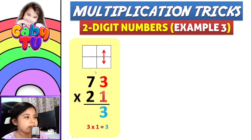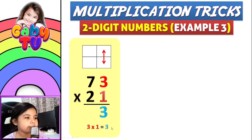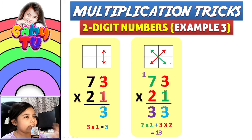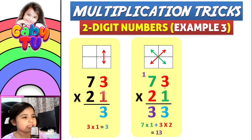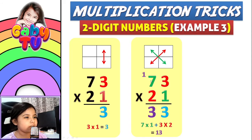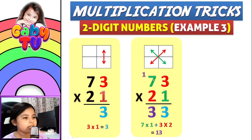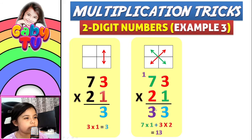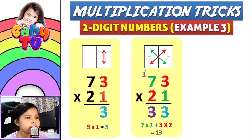Now for the next example, you have to multiply the red numbers on the right. Three times one equals three. Then you write one here on top.